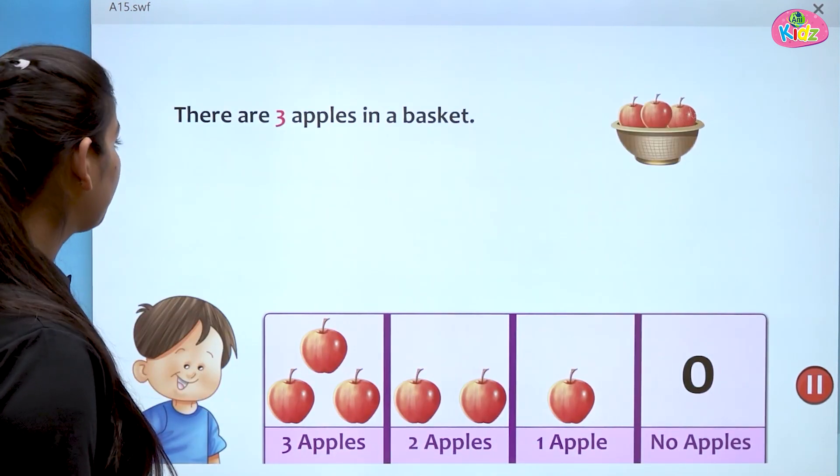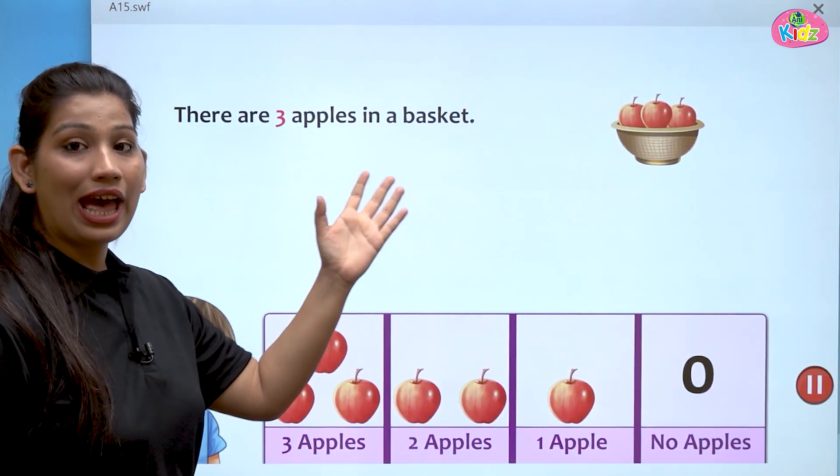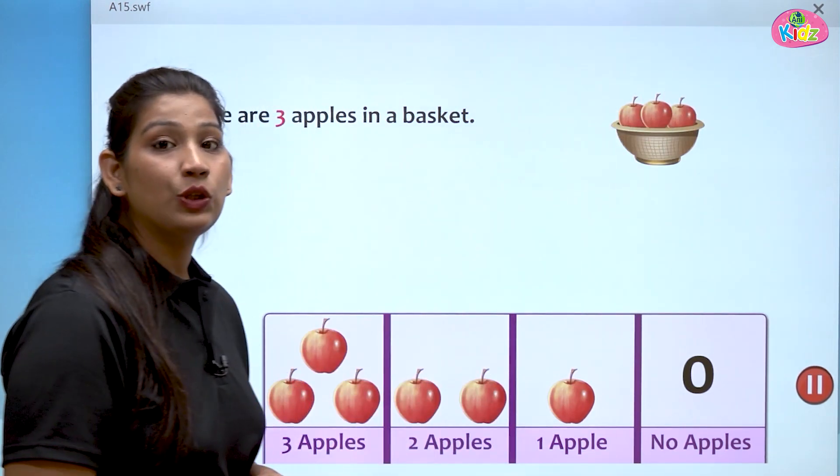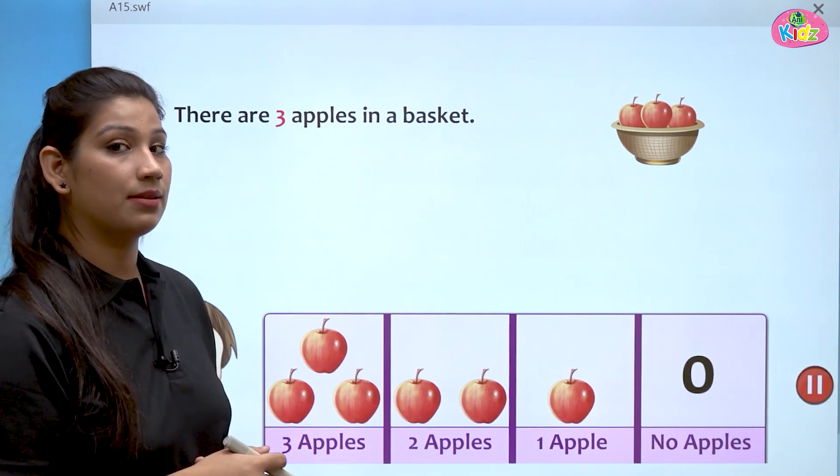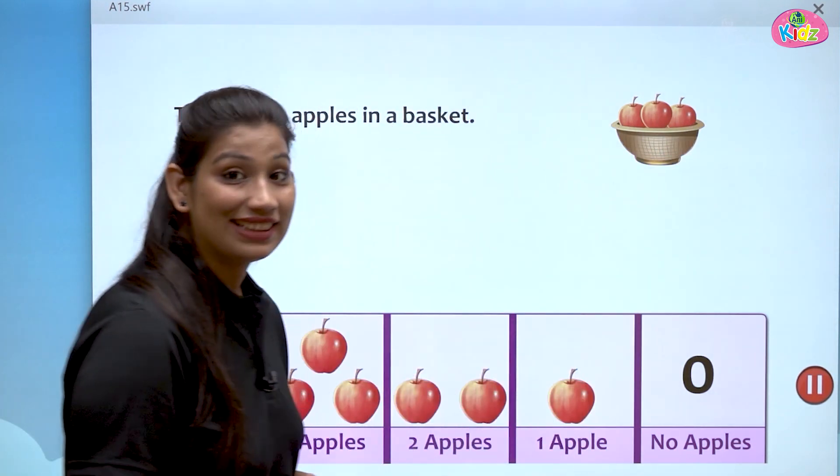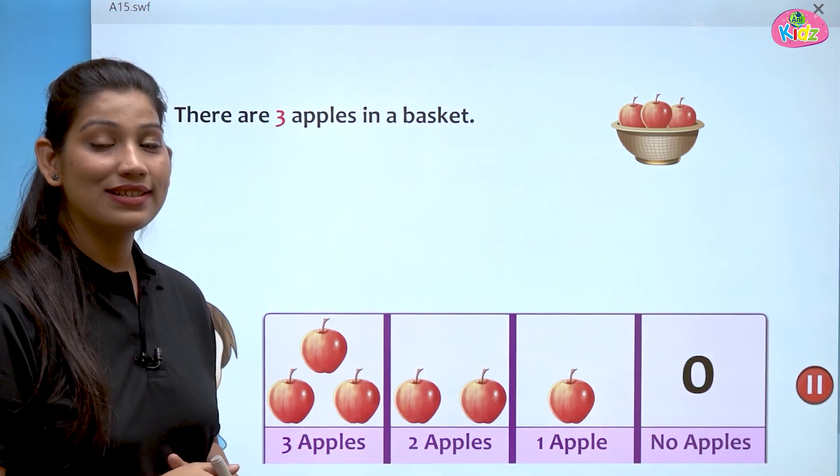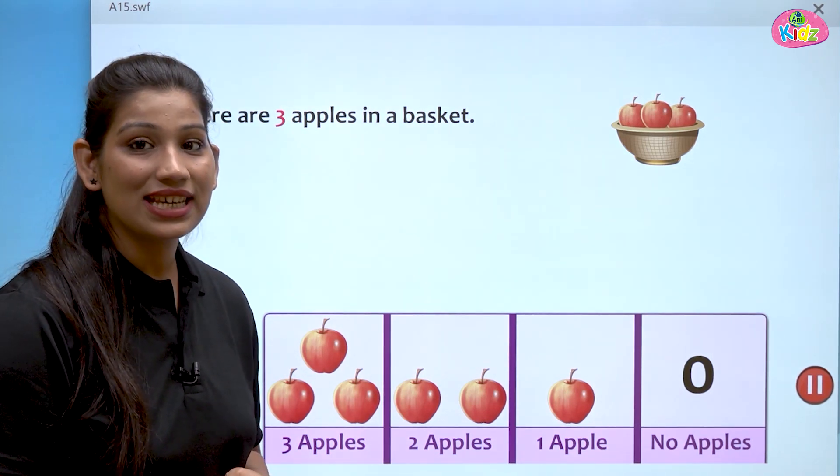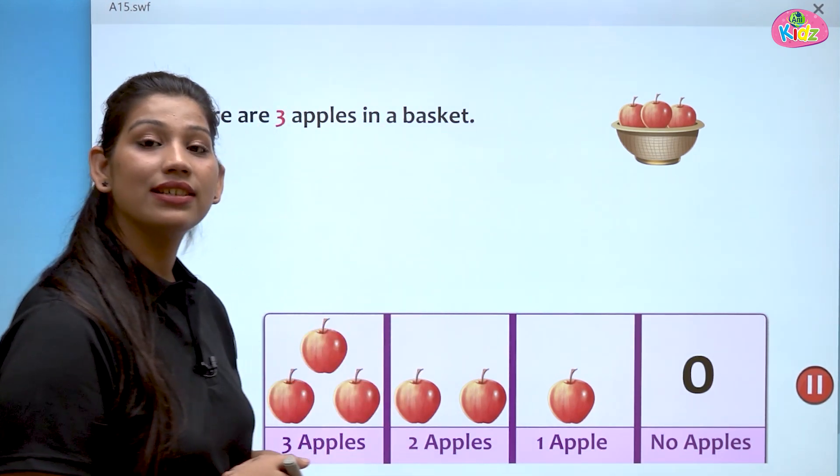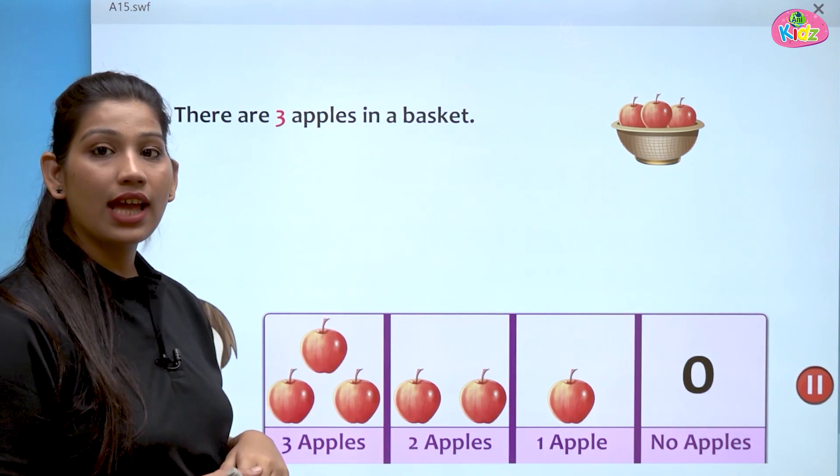Here you can see, there are three apples in a basket. This is a basket and you can see apples in the basket. One, two, three. There are three apples in a basket. How many apples in a basket? Three apples. We have counted as well.